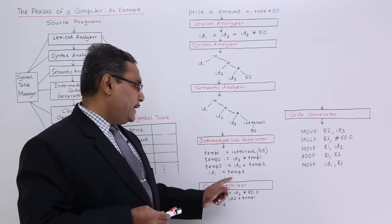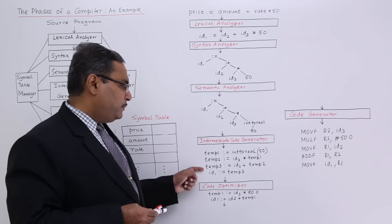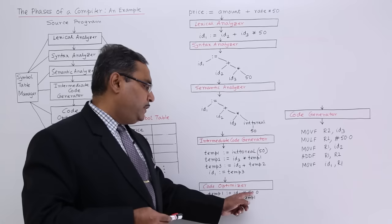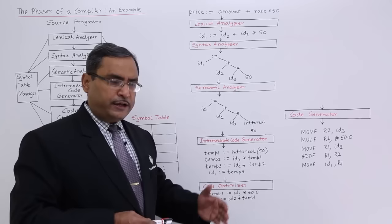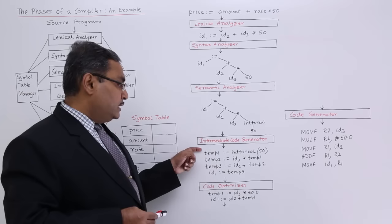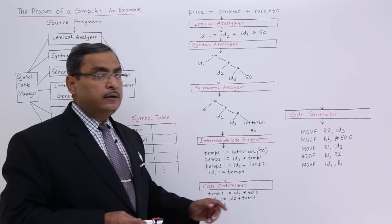The intermediate code is taken as input by the code optimizer. There are some redundancies in the four statements, which can be expressed as two statements by the code optimizer to bring optimization. The optimized code is: temp1 := id3 * 50.0 (converted to real, so it can have a fractional part), then id1 := id2 + temp1. The four statements have been reduced to two statements by the code optimizer.